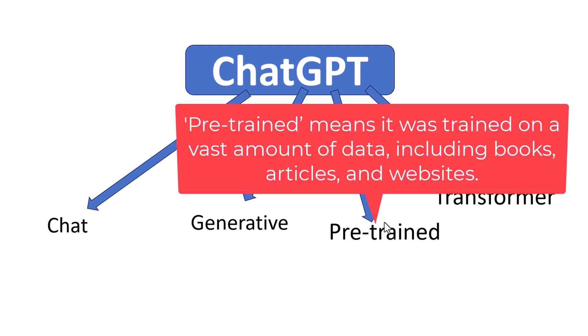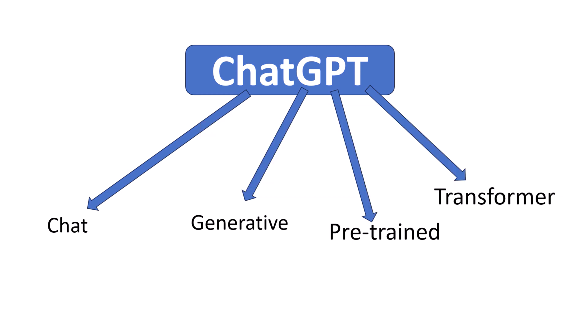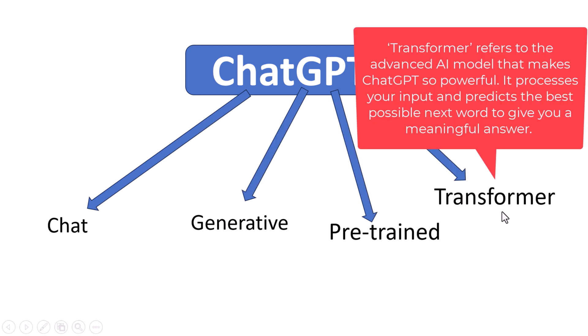Next, 'Pre-trained' means it was trained on a huge amount of data, including books, articles, and websites. This pre-training helps it understand a wide range of topics. Next, 'Transformer' refers to the advanced AI model that makes ChatGPT so powerful.